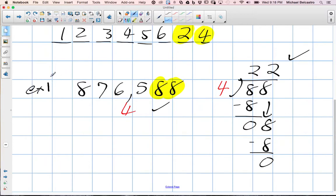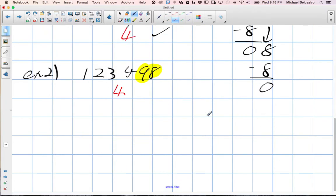There's our example 1. I'll make up another example quickly here. Let's say we had 1, 2, 3, 4, and 98. We'll focus on just the last two numbers to see if 4 is divisible by it. Does 4 go into 98? We have to know a little of our long division.